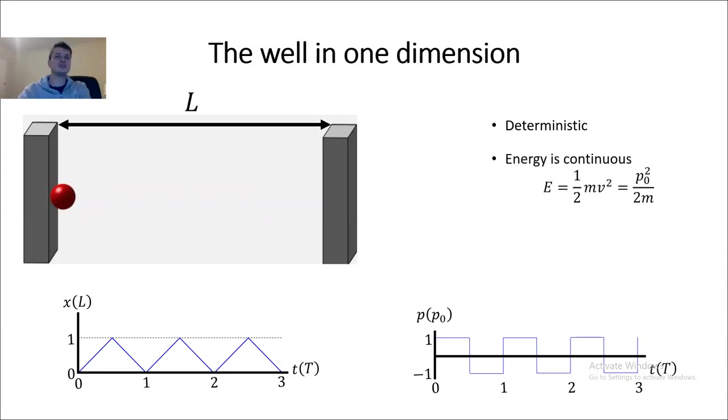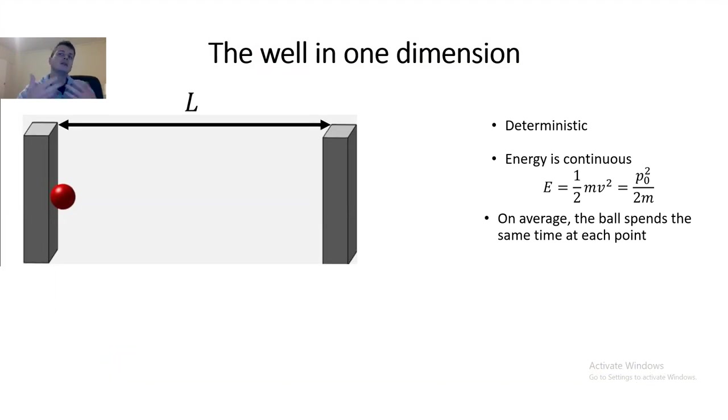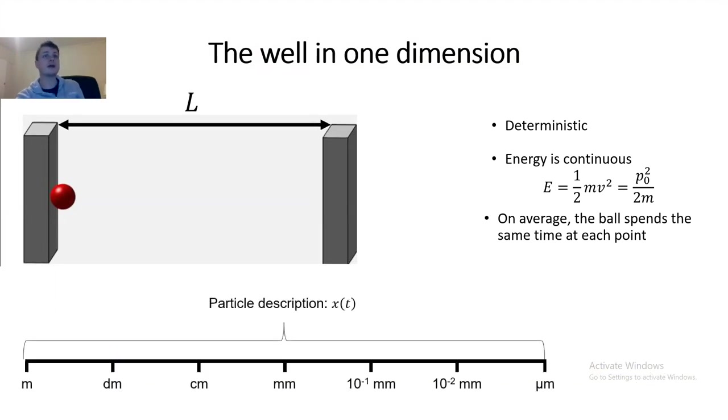And the only uncertainty that we could possibly have comes from the devices we use to measure, not from the system itself. Now, the energy of this system is continuous, and it is determined by the mass and its momentum. In principle, there is no lower limit. In fact, if the ball didn't move at all, the energy of the system would be zero. And finally, if we pick up the system at a random time, the ball can be at any position with equal probability. This is just a consequence of the fact that the potential is constant inside the well. Now, these properties are not only common sense, but also physically sound, at least in the world we all know and love, the macroscopic world.